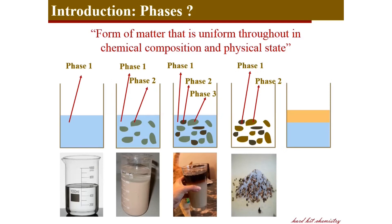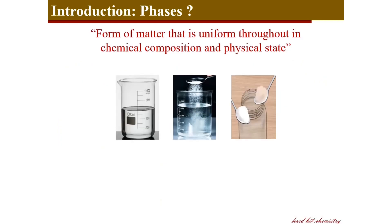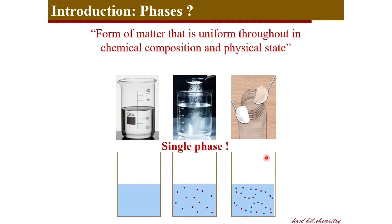Considering two immiscible liquids together, like oil and water, you have a phase constituted by the first liquid and the second phase constituted by the second liquid. With another example: a pure solvent, one solute dissolving into the solvent, and in the third case two different solutes dissolving in the solvent — in all three cases the system constitutes a single phase, because even with two solutes dissolved the system is homogeneous throughout both in chemical composition and physical state.